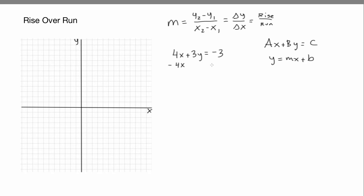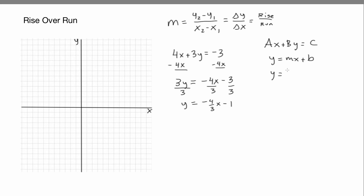We're going to subtract 4x from both sides. We get 3y equals negative 4x minus 3. Then divide everything by 3, and we get y equals negative 4/3 x minus 1. Three divided by 3 is 1 — don't forget the negative. Comparing to y equals mx plus b, the slope is negative 4/3 and the y-intercept is negative 1.